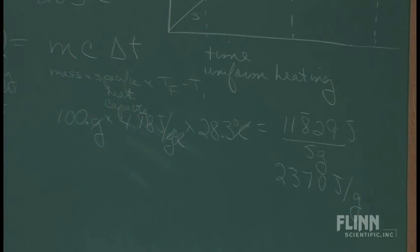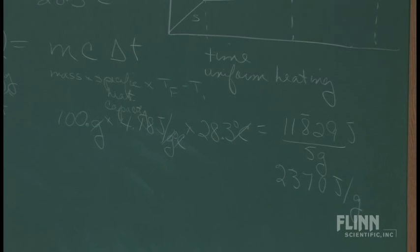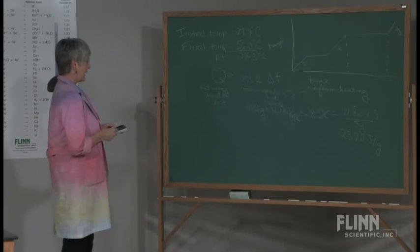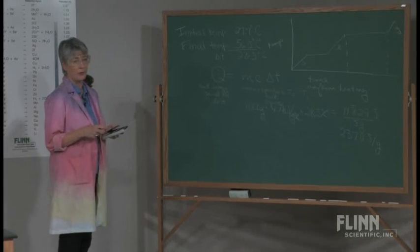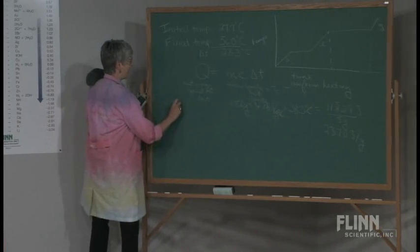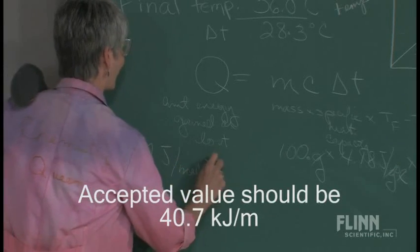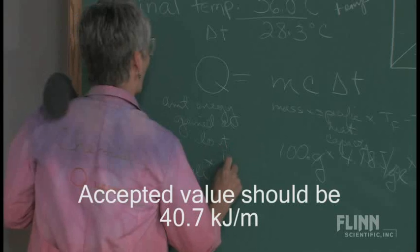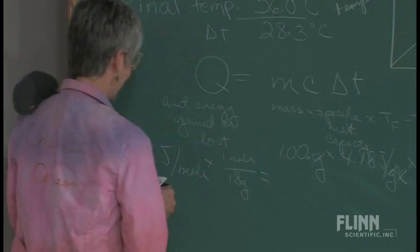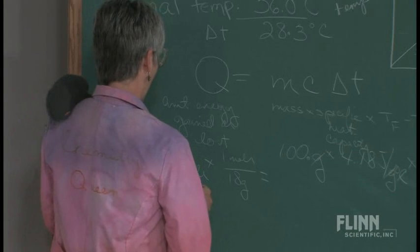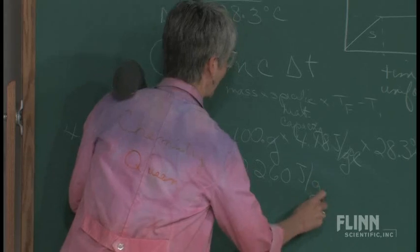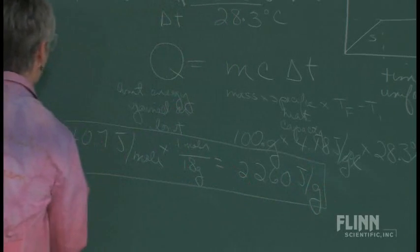And how did I do? Well, I was trying to find a book that had it in joules because I remembered it back in calories, but it's 40.7 joules per mole. So if we multiply that by 1 mole per 18 grams, I'm going to get an accepted value here of 22.60 joules per gram. And that is the accepted value.